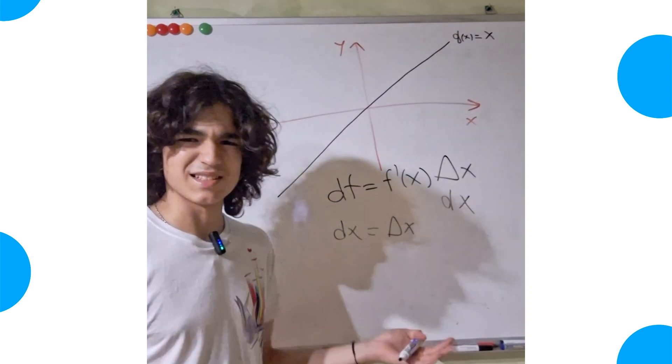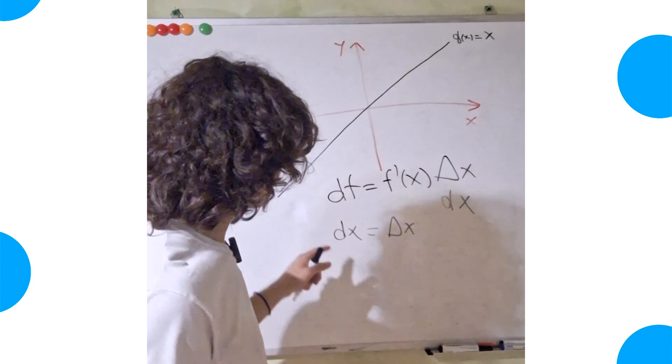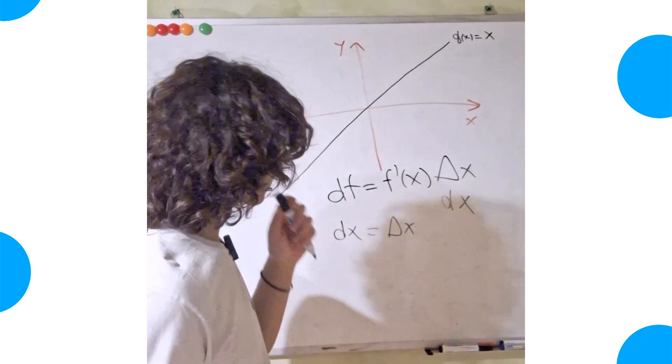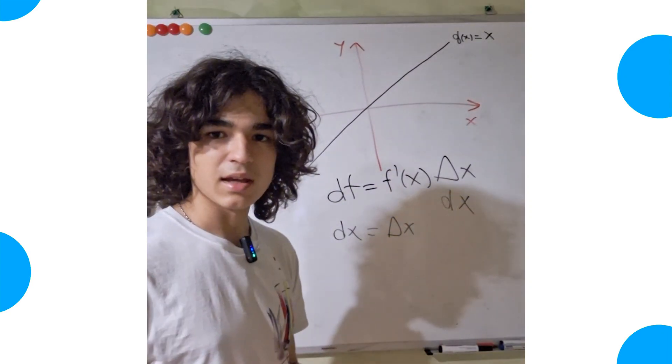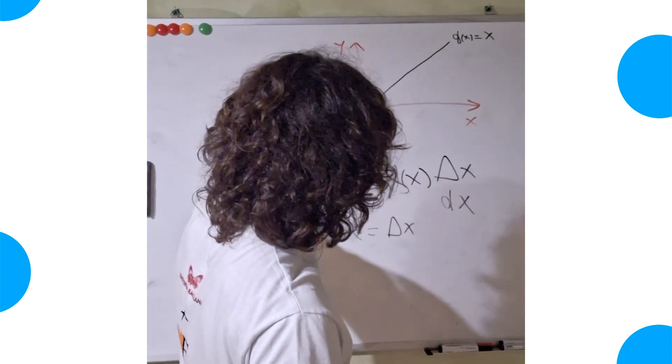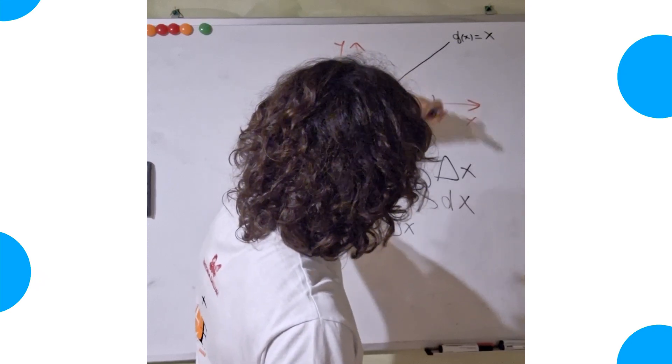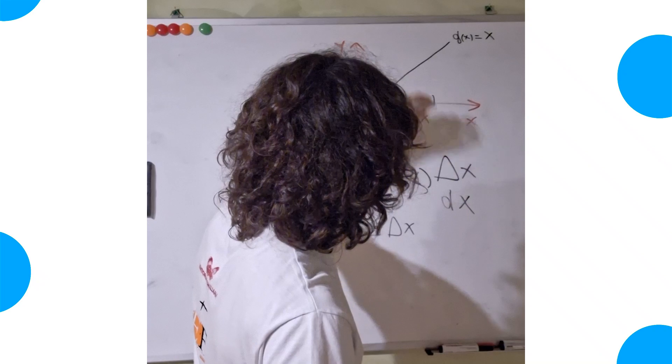But what does it mean that dx equals delta x? It sounds rather weird, isn't it? Well, it's true that it sounds weird. But what I really mean is that if you take some finite difference here, for example, for this delta here,